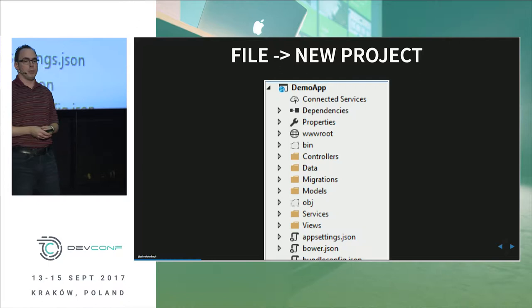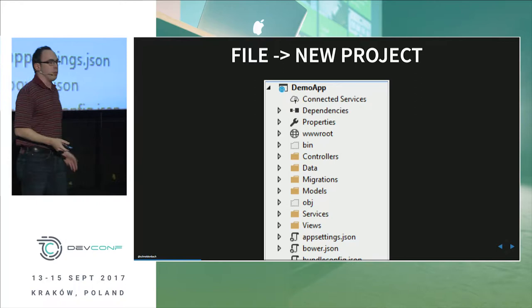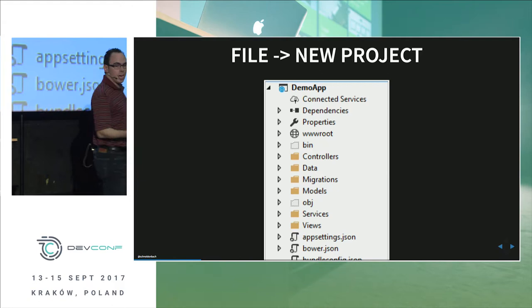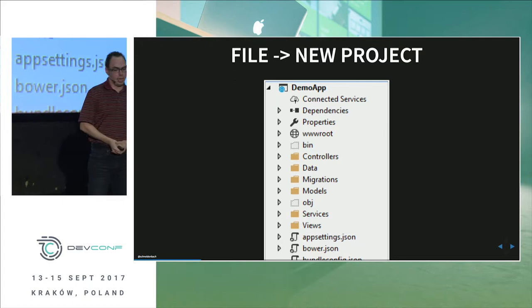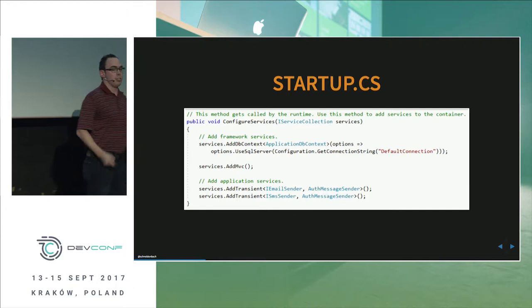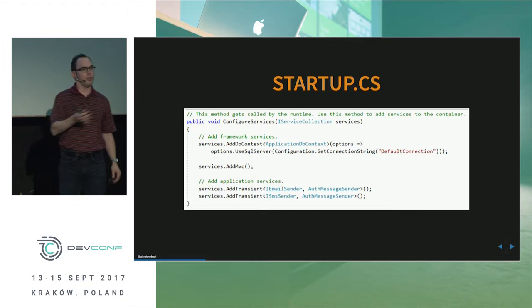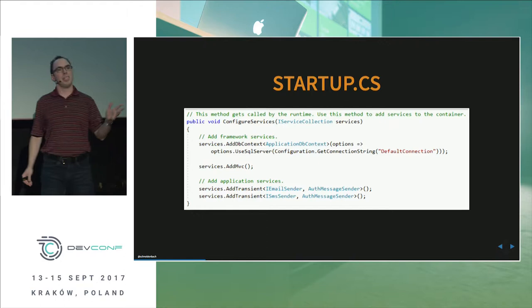So first you go to File > New Project. This is what you end up with if you choose a new Web API template. It looks pretty familiar if you've done ASP.NET Core — you've got a controllers folder and a models folder where you'd store your employee model. The controller folder is where HTTP requests are represented. You also have a Startup.cs, which is the replacement for Global.asax — it's the entry point for your application.